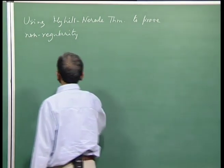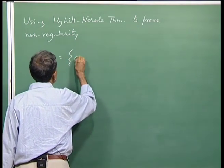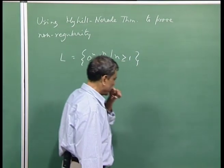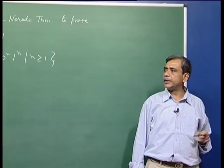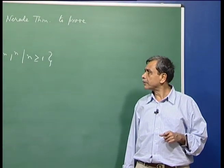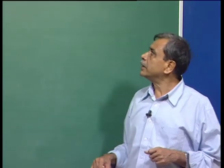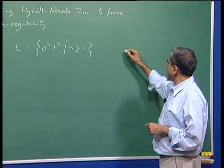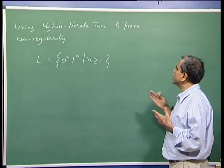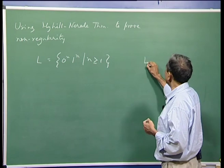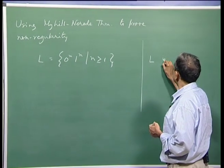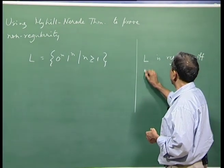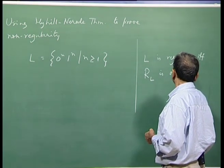For example, consider this language 0^n 1^n. We know that this language is not regular; we proved its non-regularity by the pumping lemma. Now, the way we use the Myhill-Nerode theorem to prove non-regularity is this.